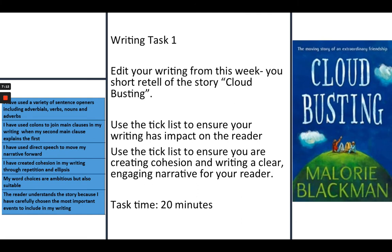Remember that when we edit, we don't read our writing simply one time and say done. I suggest you read your story one time for each of the rows in the checklist. For example, the first time you read your story, you will be thinking about sentence openers and checking, making edits and improving your sentence openers. The second read through, you will be checking that you have used colons and used them appropriately. In your third read, you will check and edit and improve your direct speech and so on. This task should take you approximately 20 minutes. Pause the video here and come back in 20 minutes after you have edited your story.